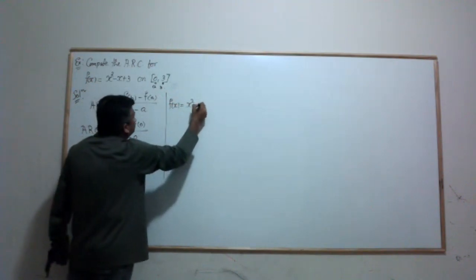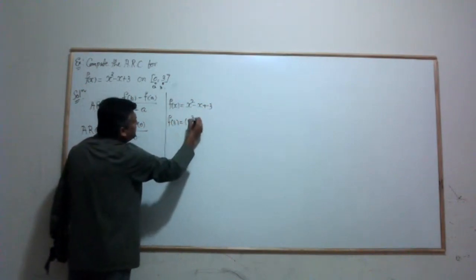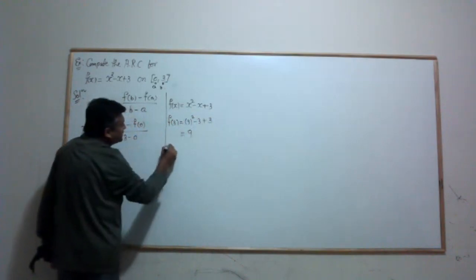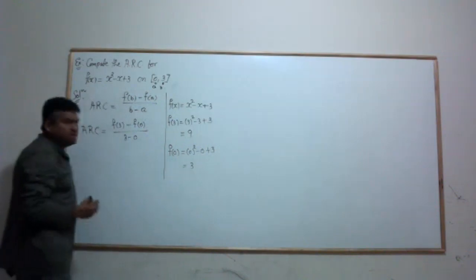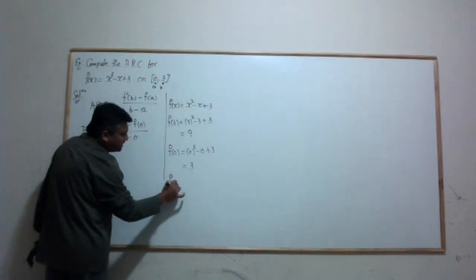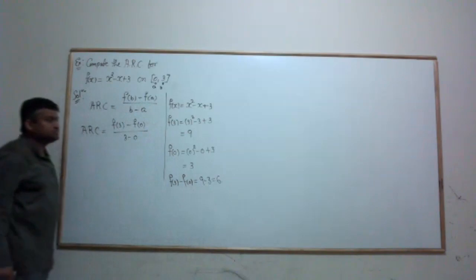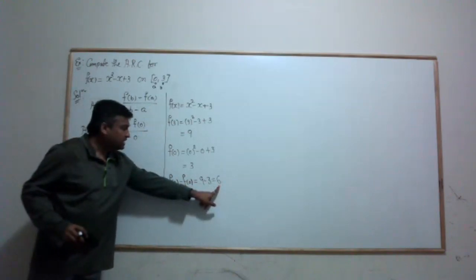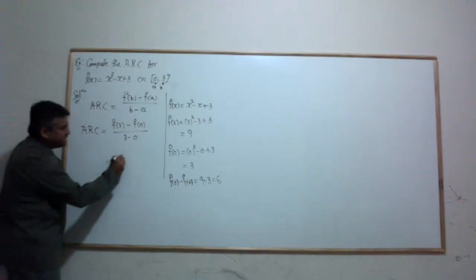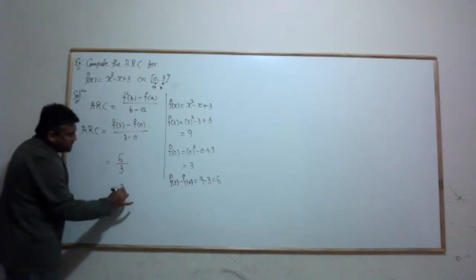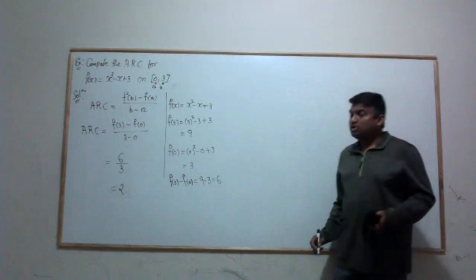f(x) = x² - x + 3, so f(3) = 9 - 3 + 3 = 9, and f(0) = 0 - 0 + 3 = 3. The difference f(3) - f(0) = 9 - 3 = 6. Substituting: 6 divided by (3 - 0) = 6/3 = 2. So the average rate of change for this function on the interval [0, 3] is 2.